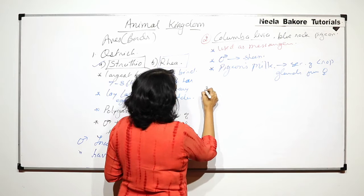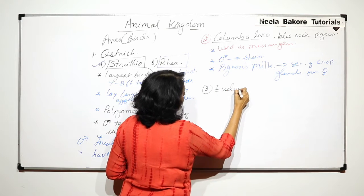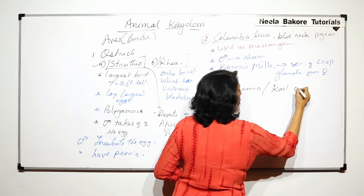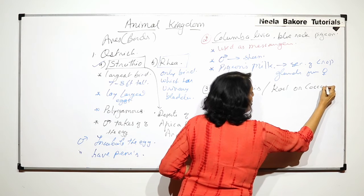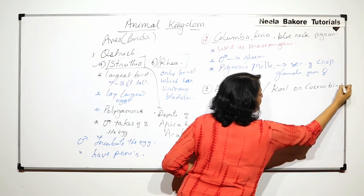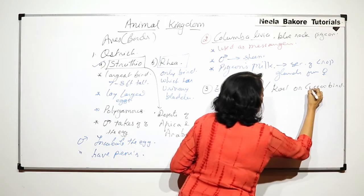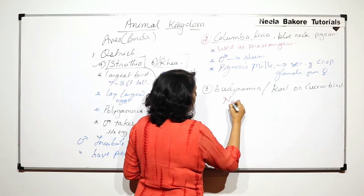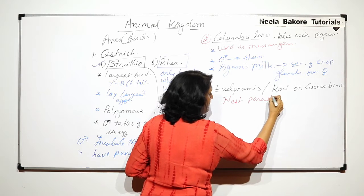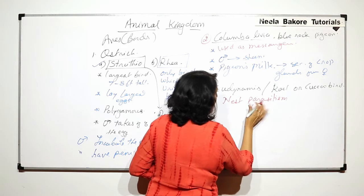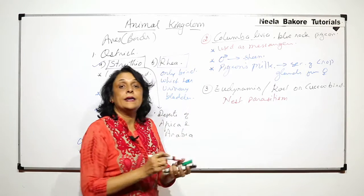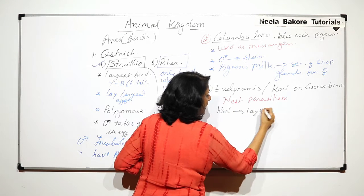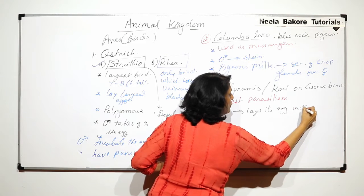The next example is Eudinemis, which is commonly known as coel or cuckoo bird. Now, there is one thing which is very famous about cuckoo bird is called nest parasitism. Let us first understand this.